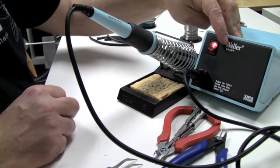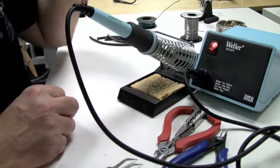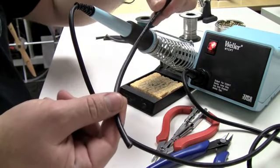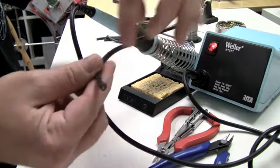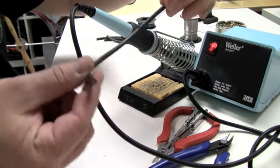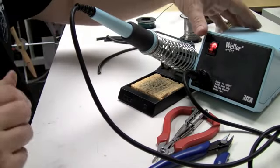This is a Weller WTCPT. It's one of the most common ones out there. 10 gauge wire like this. That extra copper in the wire acts as a heat sink, drawing the heat away from what you're trying to solder. So it becomes very difficult if you don't have enough power in your soldering iron.